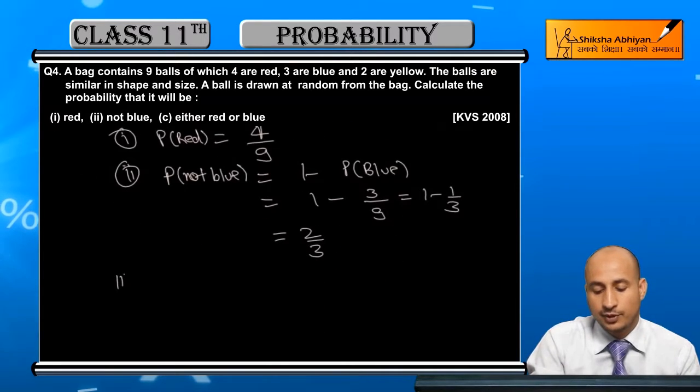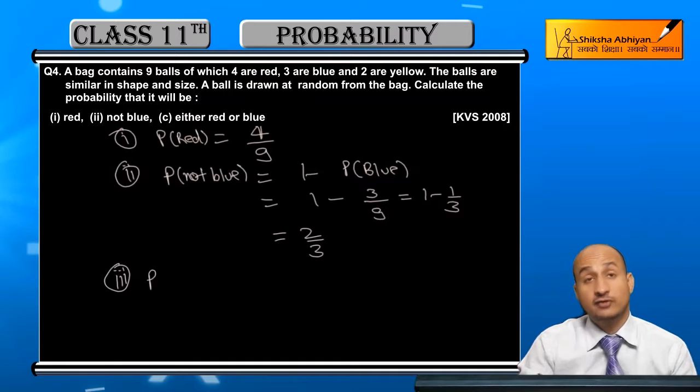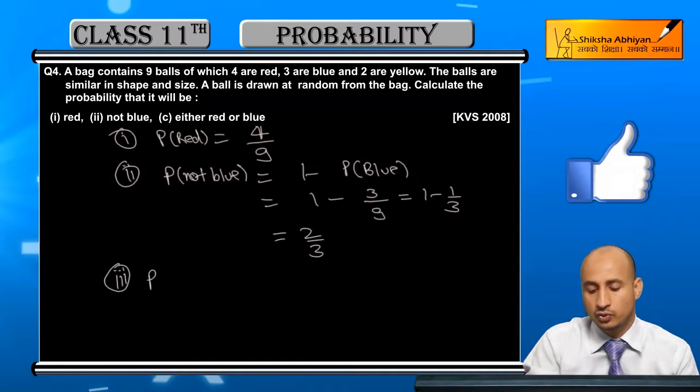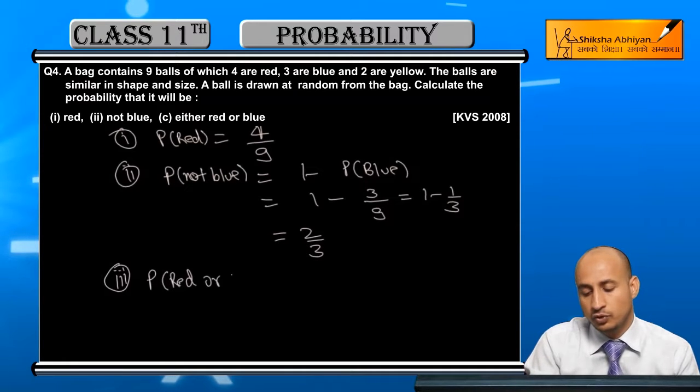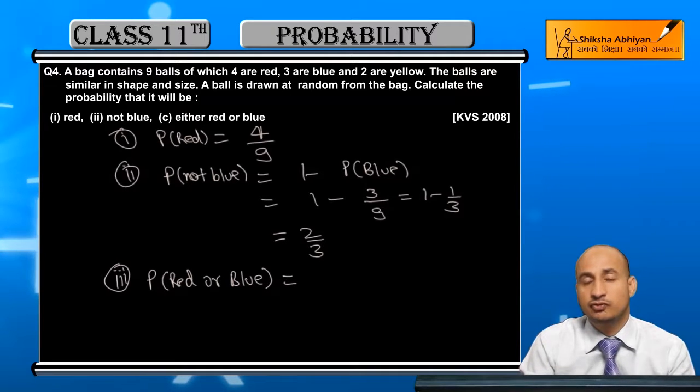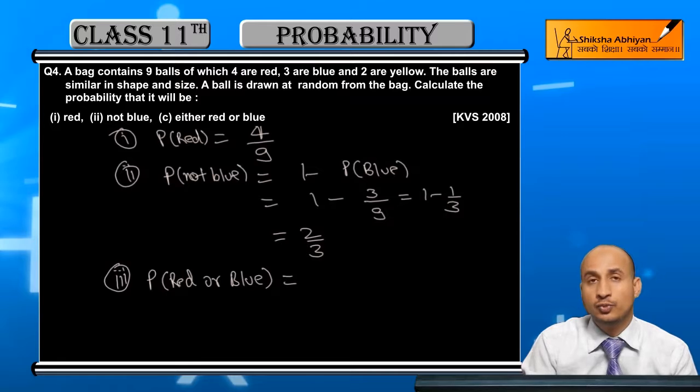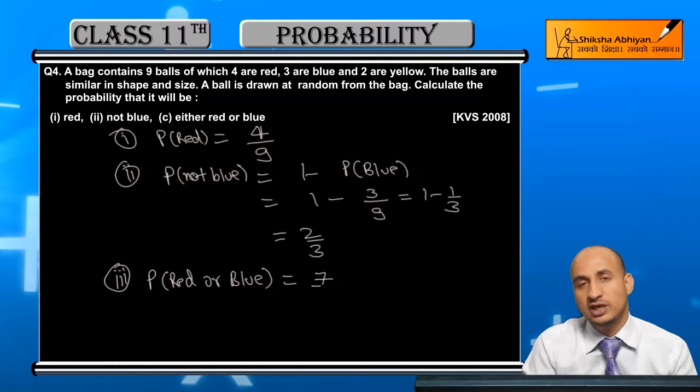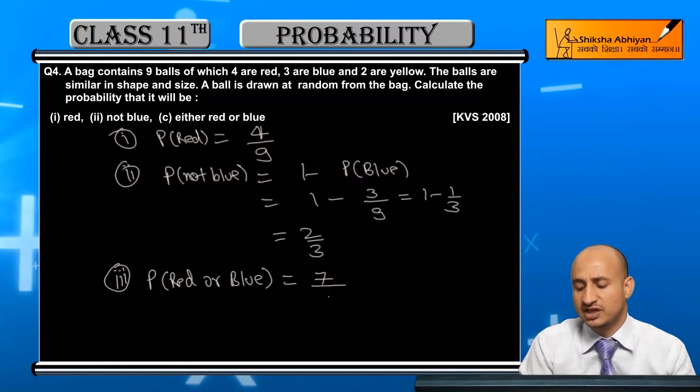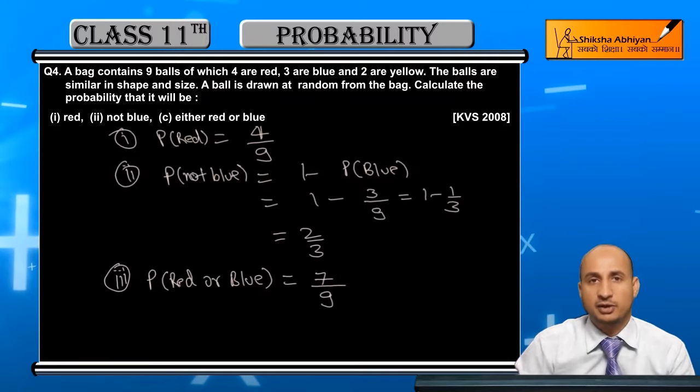And third part, what is the probability of either red or blue? Either red or blue. So you have to be red or blue, whatever comes from red or blue. For that, if you have any one of those, the total number of red is 4, the blue number is 3. So 4 plus 3 upon 9. So 7 by 9. Then there will be just yellow left. 7 by 9. This is 7 by 9.